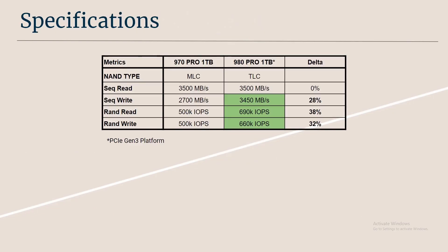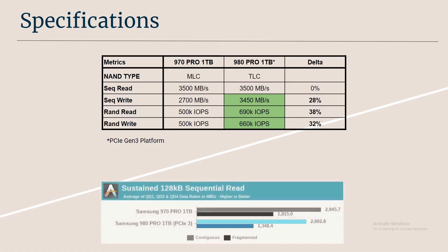Looking at specs, the 980 Pro has a pretty good advantage even on a Gen 3 platform — these are all Gen 3 speeds. The sequential write speed, random write, and read are much higher than the 970 Pro. However, the 970 Pro's advantage is its MLC NAND, which gives it really good sustainable speeds. I was able to find sustained sequential read benchmarks, and you can kind of infer the sustainable write performance from those.